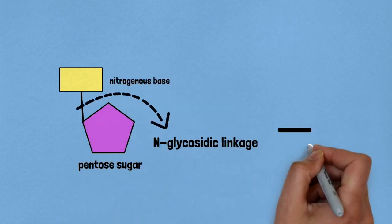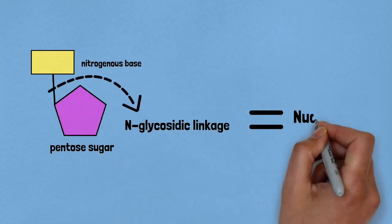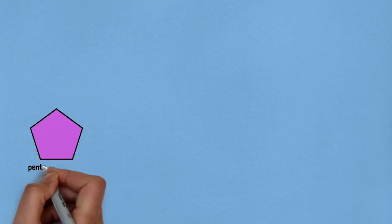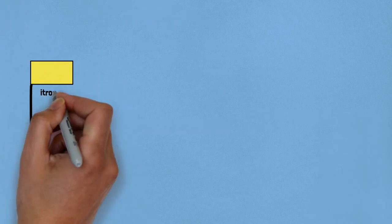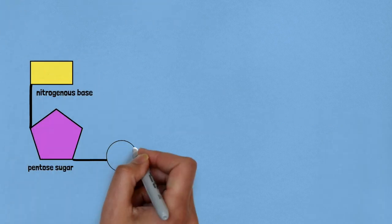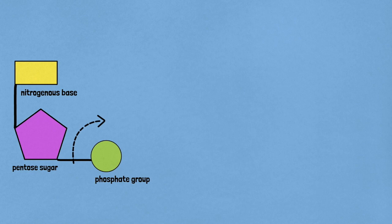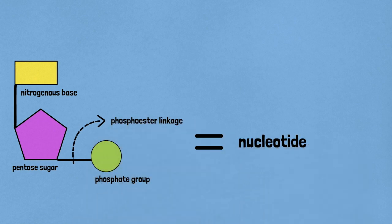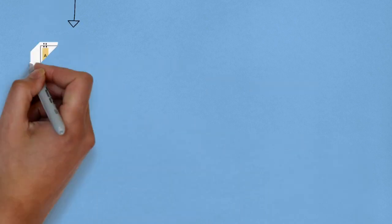A nitrogenous base is linked to the pentose sugar by an N-glycosidic linkage and forms a nucleoside. A phosphate group is linked to the 5'-OH of a nucleoside through phosphoester linkage and it forms a nucleotide.